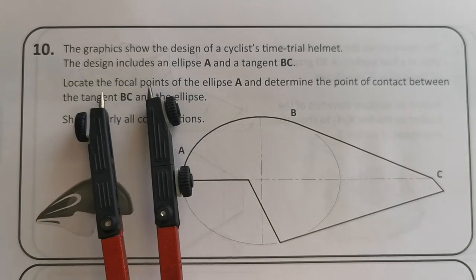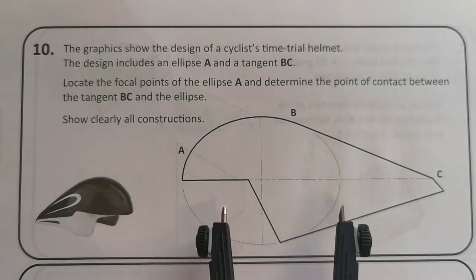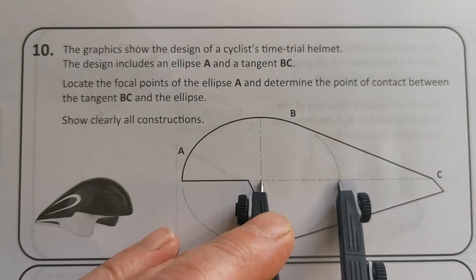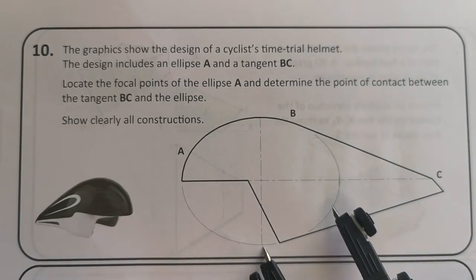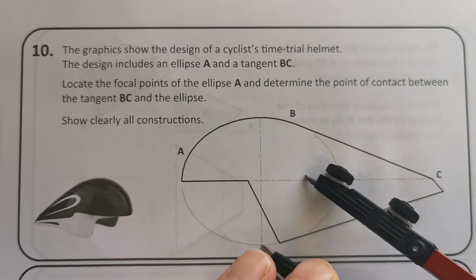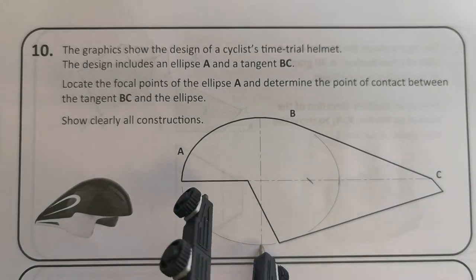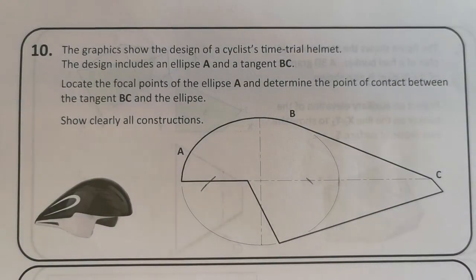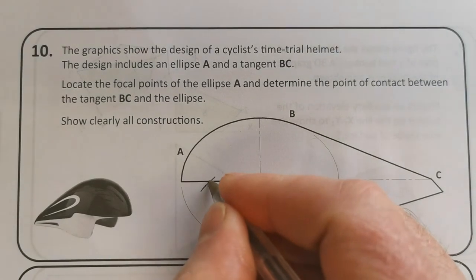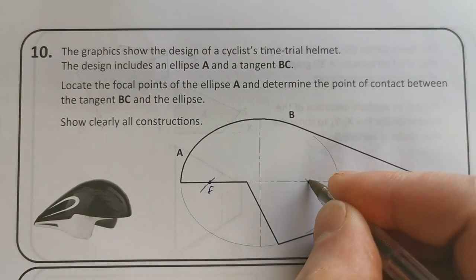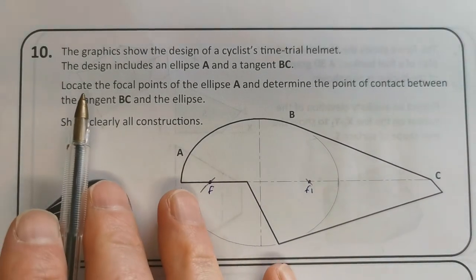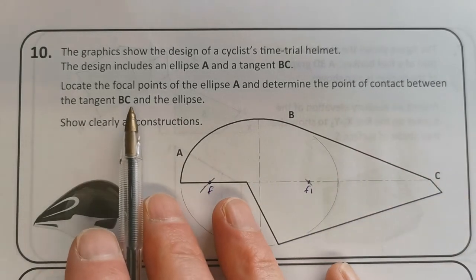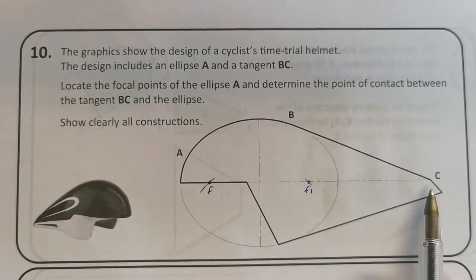Question ten: look at the focal points of the ellipse. You need to know the focal points — half the major, swung from the end of the minor, top or bottom, gives you the focal points. I'll mark those in as F and F1. So: locate the focal points and determine the point of contact between the tangent BC and the ellipse.